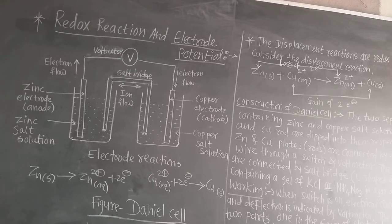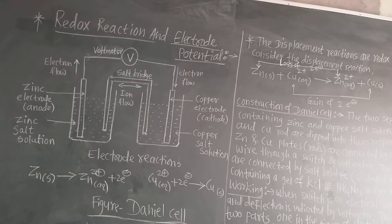If you dip a zinc rod or zinc plate into copper sulphate solution, you know that copper sulphate solution is blue in colour. Copper sulphate is also called blue vitriol — in Marathi it is called mortu. It has a bluish colour.